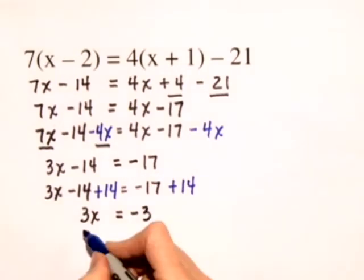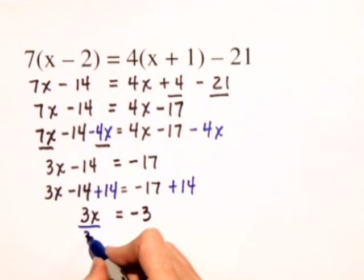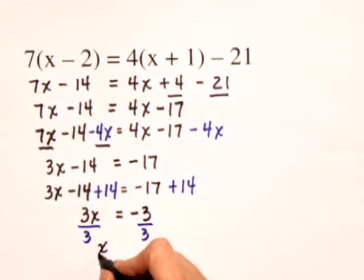The last step is to divide both sides by 3 and we get our solution that x is equal to negative 1.